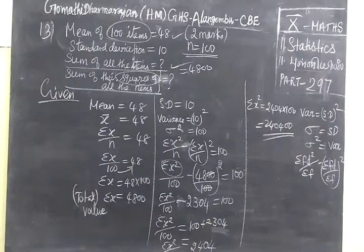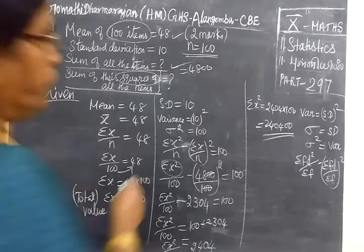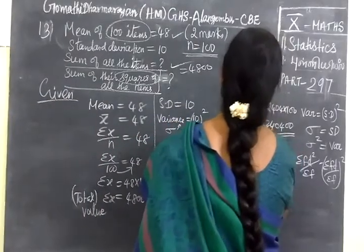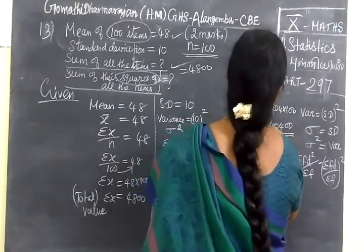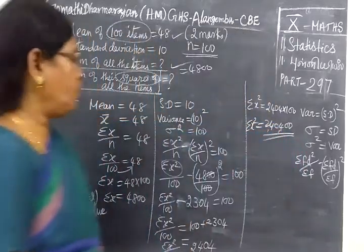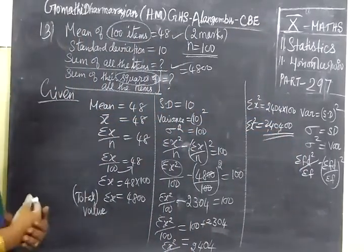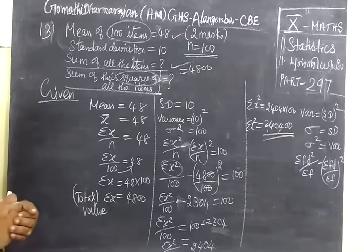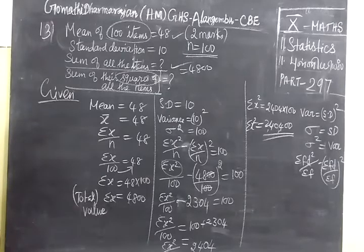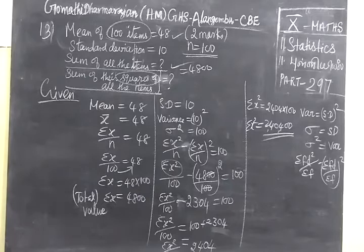2404 then 100, so this is sigma X square. This will come under 2 more questions only, 5 mark questions. Thank you.